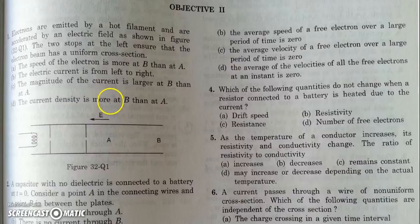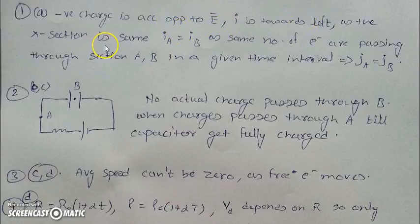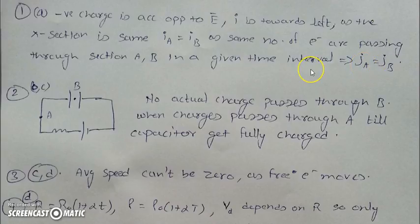To summarize: negative charges are accelerated opposite to the field, current is toward the left. I_A will be equal to I_B as the number of electrons passing through cross-sections A and B are the same in a given time interval. Since the cross-sections are also uniform, J_A will be equal to J_B.